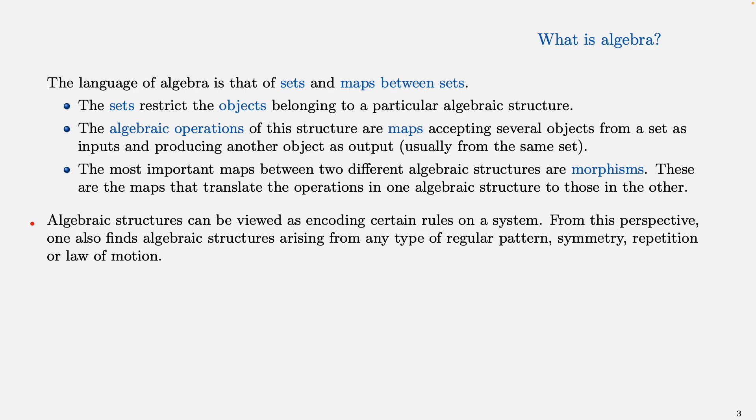An algebraic structure can be viewed as an encoding of certain rules on a system. So from this perspective we can find algebraic structures arising from any type of regular pattern or symmetry or repetition or a law of motion.